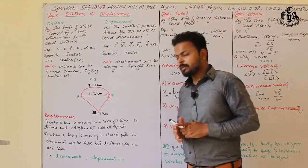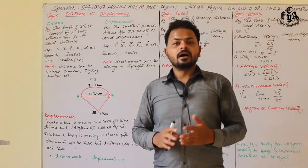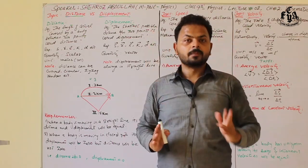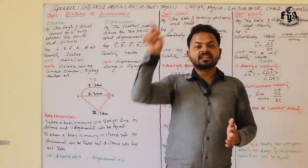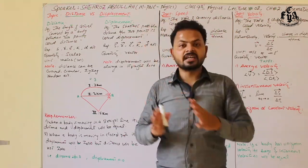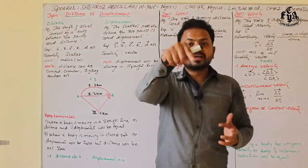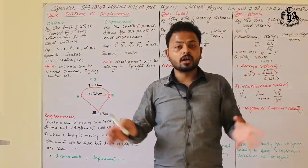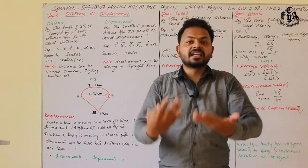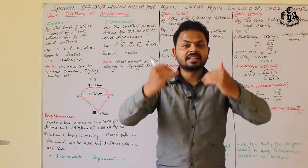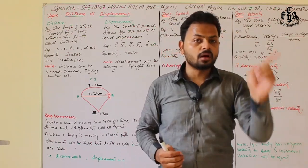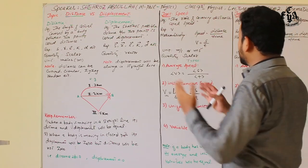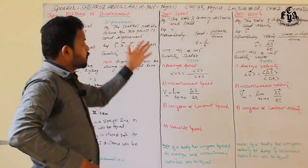Remember two special cases: when a body moves in a straight line, its distance and displacement are both equal. When a body moves in a circular or any closed path — rectangular, triangular — the distance is not zero but displacement is zero, because the starting and ending points are the same.